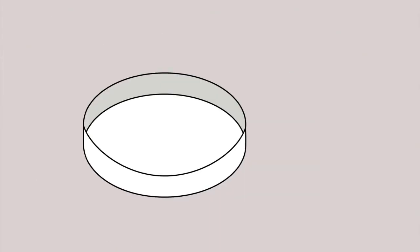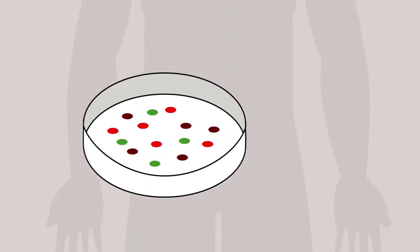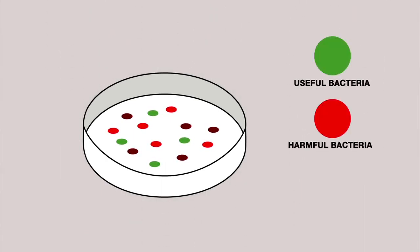To understand how resistance spreads, let's take a closer look at this bacteria sample, which is similar to what can be found in our bodies. Some bacteria are good, but others make us ill, and some of these may already be resistant.